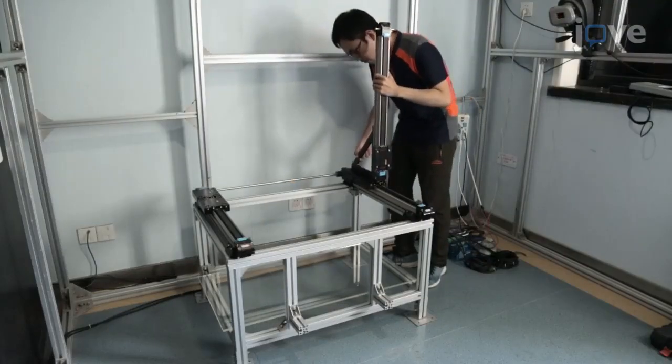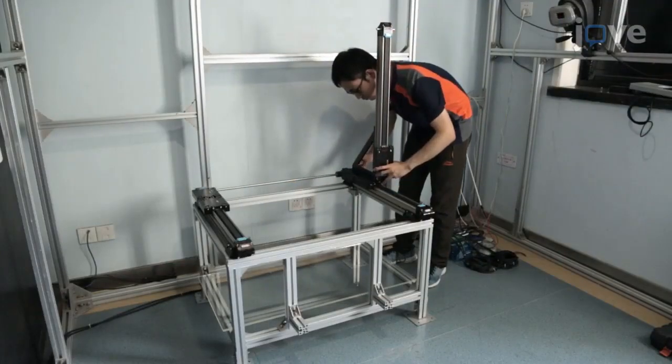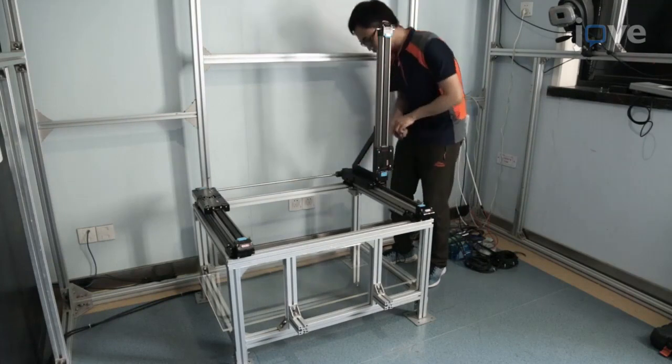Fix the other right-angled sides of the two triangle frames to the sliders of the two Y-rails with screws.